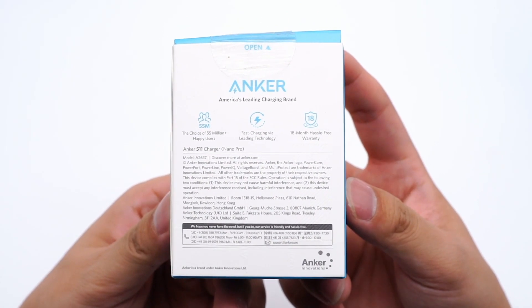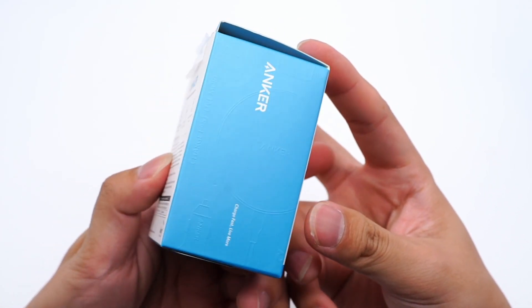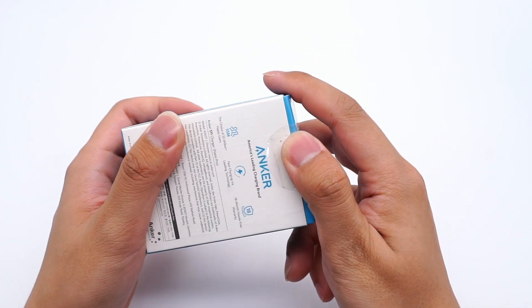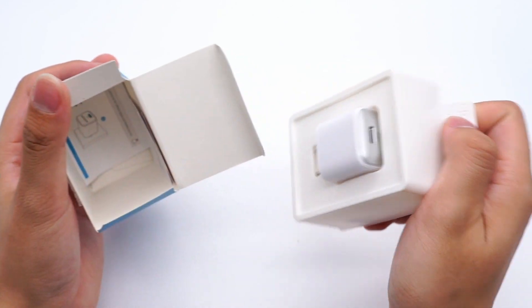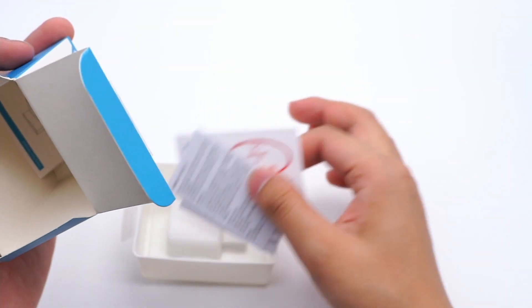The box is white and blue as usual. Some information is printed on the back. Open the box and take out the charger. Just some warranty documents and manuals.